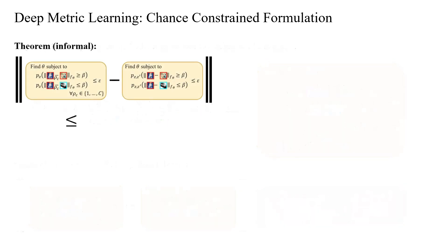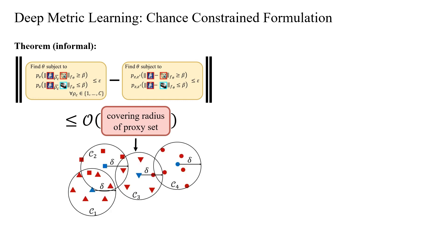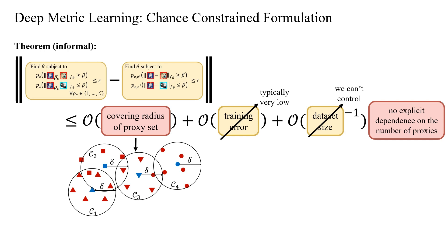We have demonstrated that the generalization error in proxy-based metric learning is bounded by three factors: covering radius of the proxy set, which measures how well the proxies cover class samples representing the maximum distance between a class sample and its closest class proxy; training error, typically very low; and dataset size, beyond our control and problem specific. Notably, there is no explicit dependence on the number of proxies.